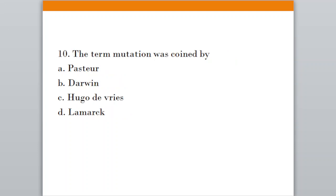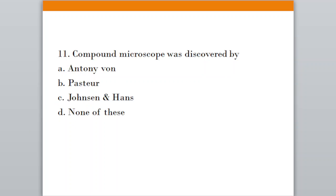Question number ten: The term mutation was coined by. Option A, Pasteur; Option B, Darwin; Option C, Hugo de Vries; Option D, Lamarck. The correct answer is option C, Hugo de Vries.